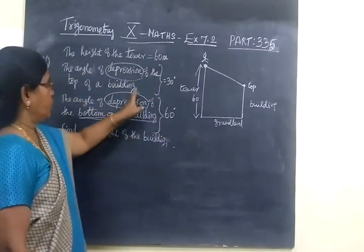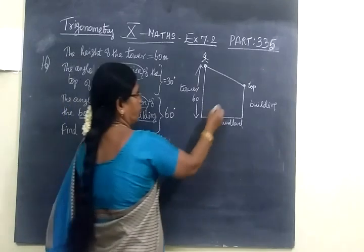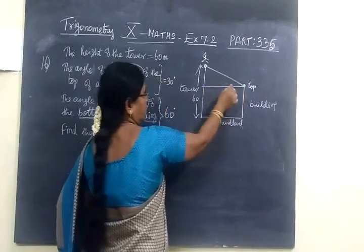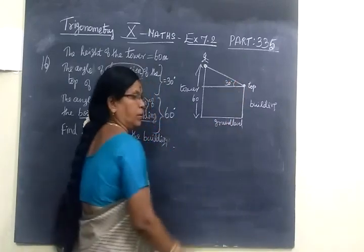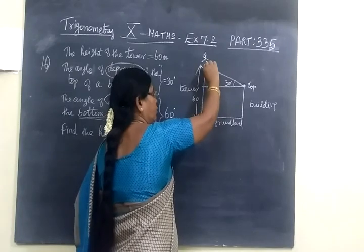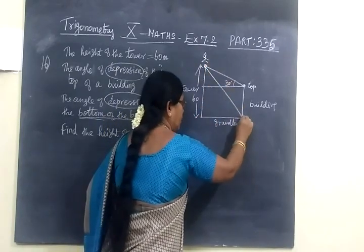At an angle of depression, 30 degrees. So where you mark 30 degrees? You just draw like this. This is 30 degrees. And the other is eye level to bottom, bottom of the same building.